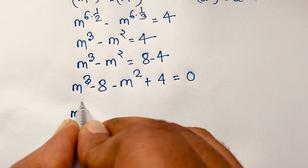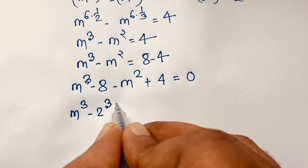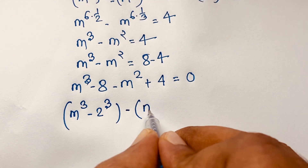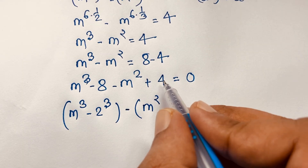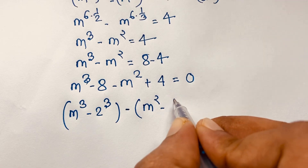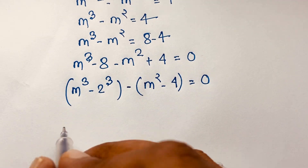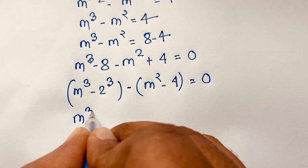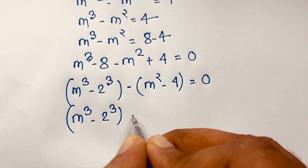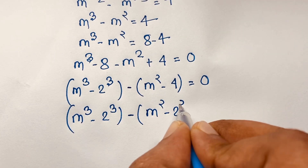You can see this expression becomes m to the power 3 minus 2 to the power 3, since 2 to the power 3 equals 8. I take negative sign as common, so it will be negative of m squared minus 4, and this equals 0. So this is m to the power 3 minus 2 to the power 3, minus bracket m squared minus 2 to the power 2, equals 0.